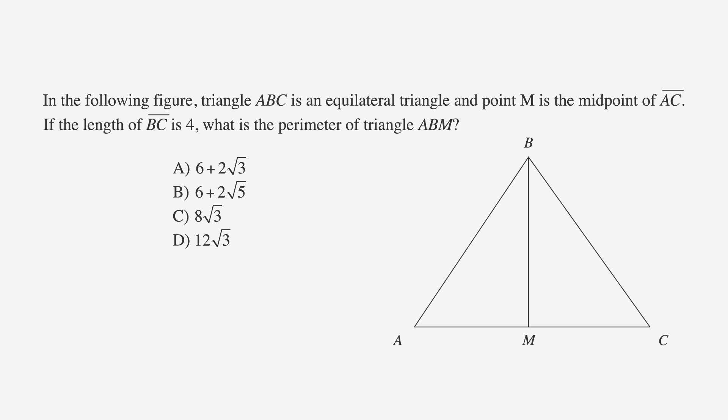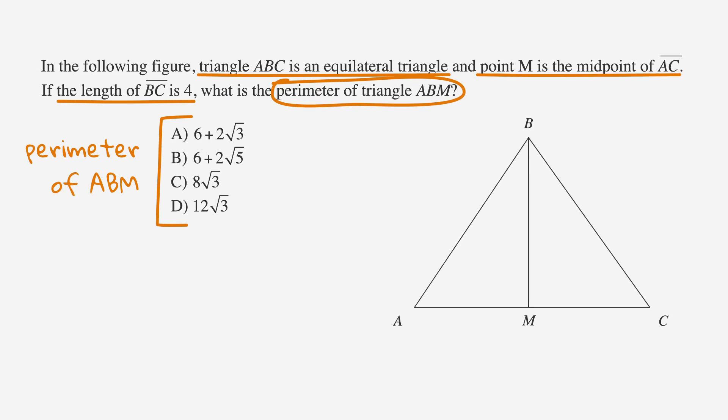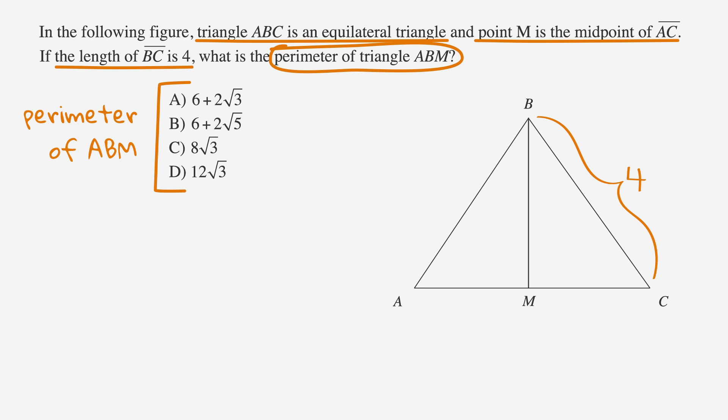Let's underline the facts and circle the keywords. Underline the length of side BC is 4, triangle ABC is an equilateral triangle, and point M is the midpoint of AC. Circle perimeter of triangle ABM, then label the answers perimeter of triangle ABM. So, let's label what we know. BC equals 4. That means that AC and AB have to be 4 as well, since this is an equilateral triangle. Next, we can use the fact that M is the midpoint of AC to figure out that the lengths of AM and MC are 2.